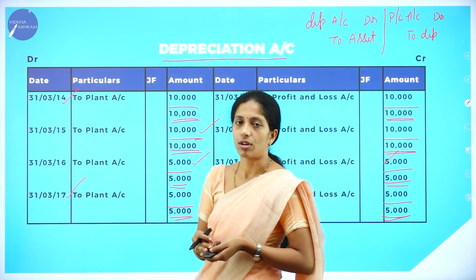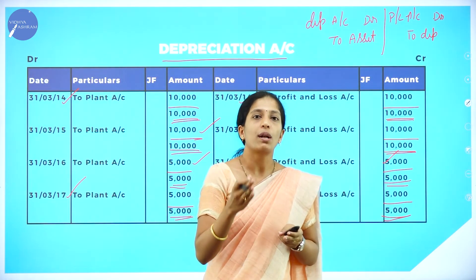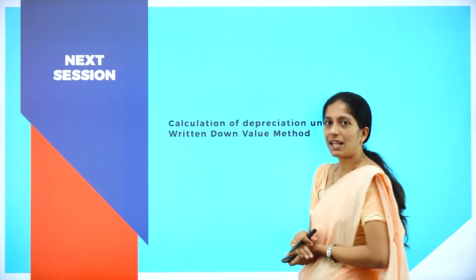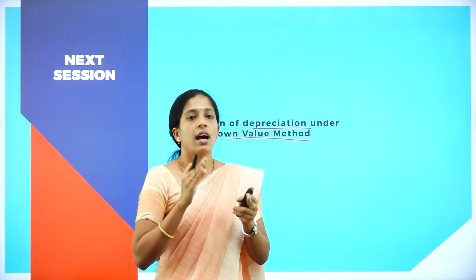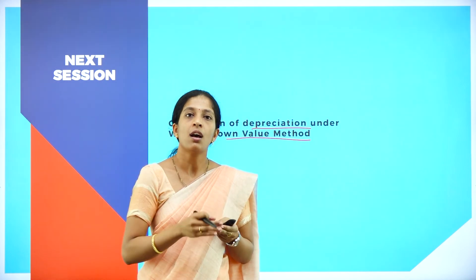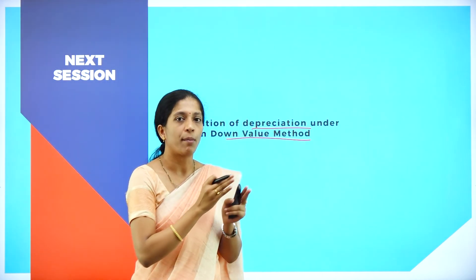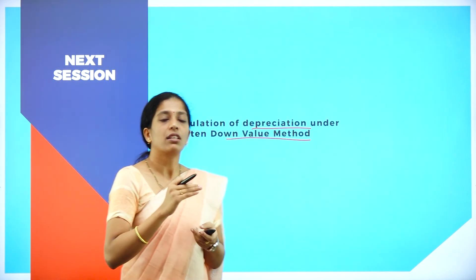Hope you are clear with the depreciation account. This completes the problem on the straight line method. In the next session, we will continue with one more method of calculating depreciation — the written down value method, also called the diminishing balance method. From this chapter, you will definitely get a 12-marks problem; the entries remain the same but the depreciation calculation differs between methods. See you all in the next session — till then, take care. Thank you.